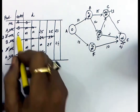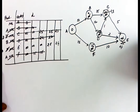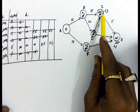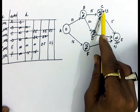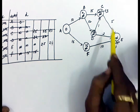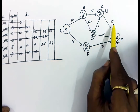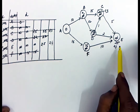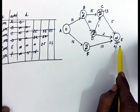We delete the minimum, which is C at distance 23. Looking at the connection from C: C to E has cost 5, so 23 plus 5 = 28, which is not less than E's current distance of 24, so we do not update E.